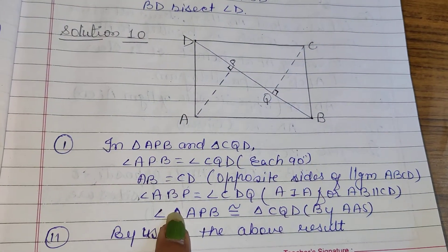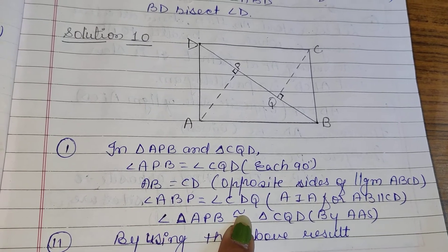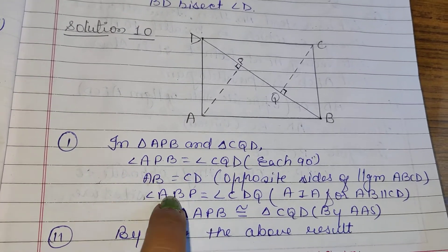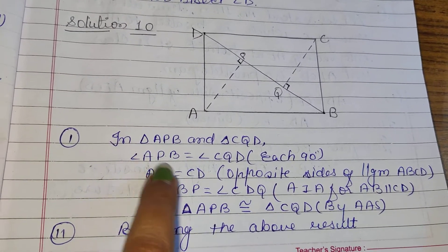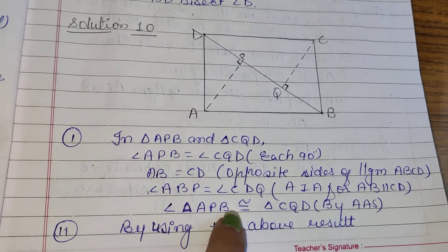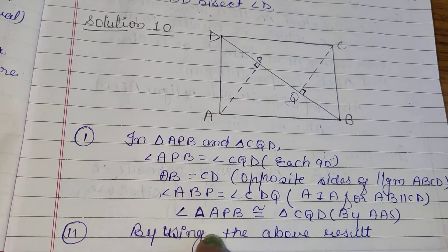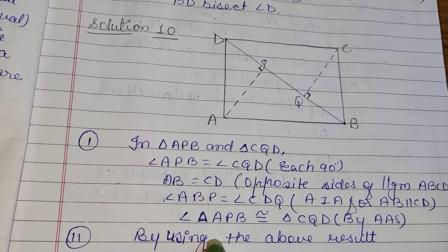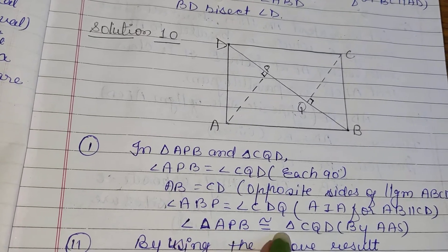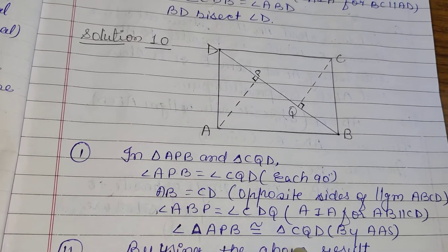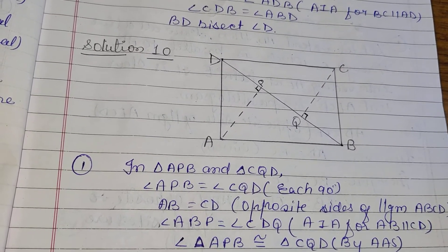With AB parallel CD, these two angles are alternate interior angles. So by Angle-Angle-Side criteria, we can write that both triangles are congruent. Triangle ABB is congruent to triangle CQD by Angle-Angle-Side criteria.